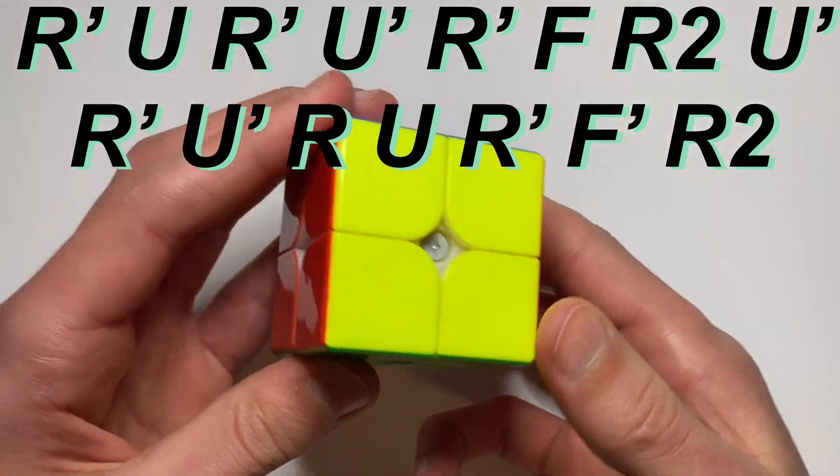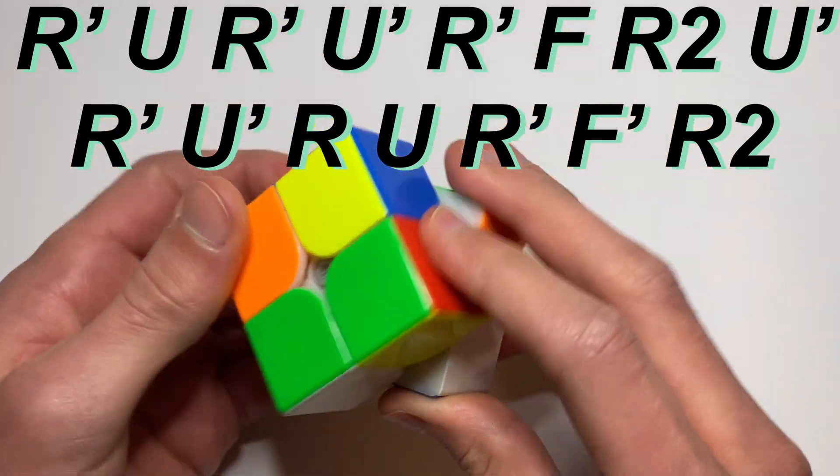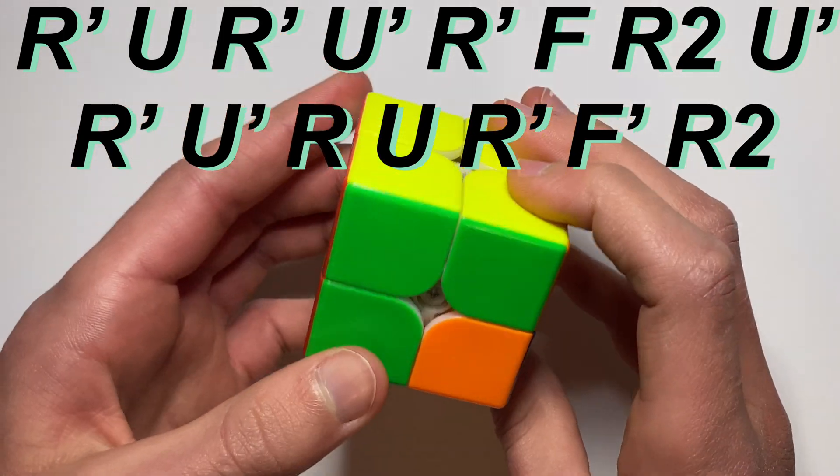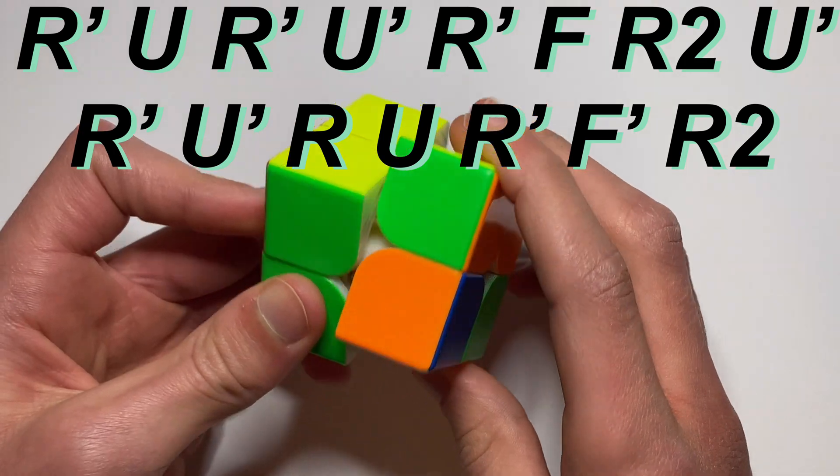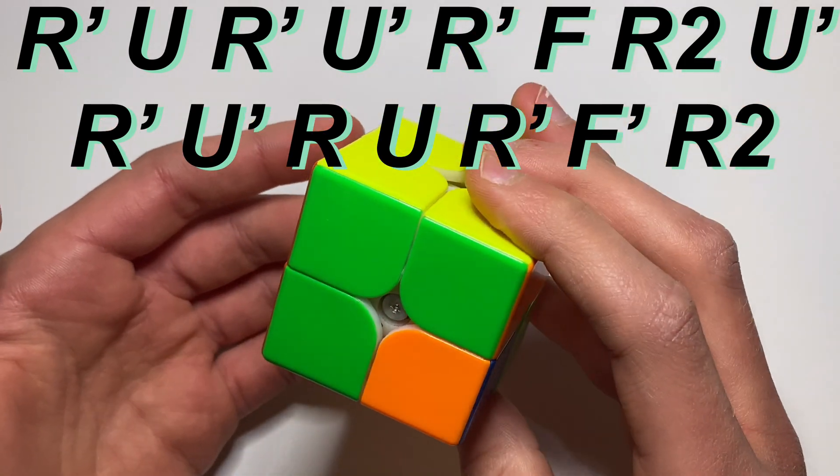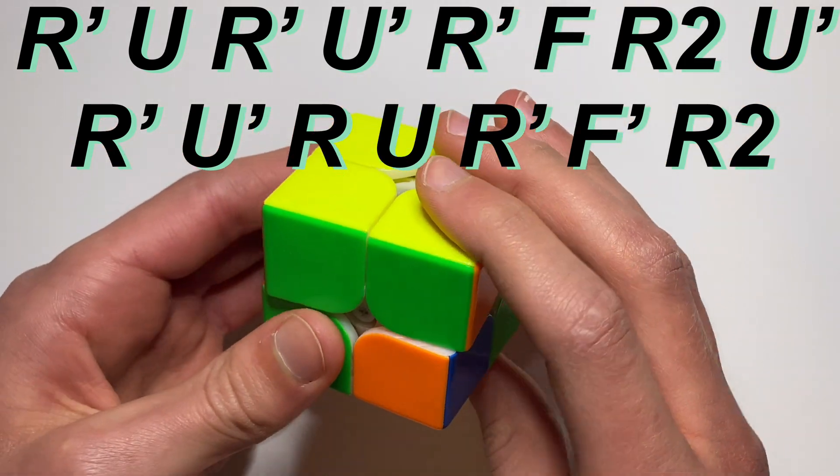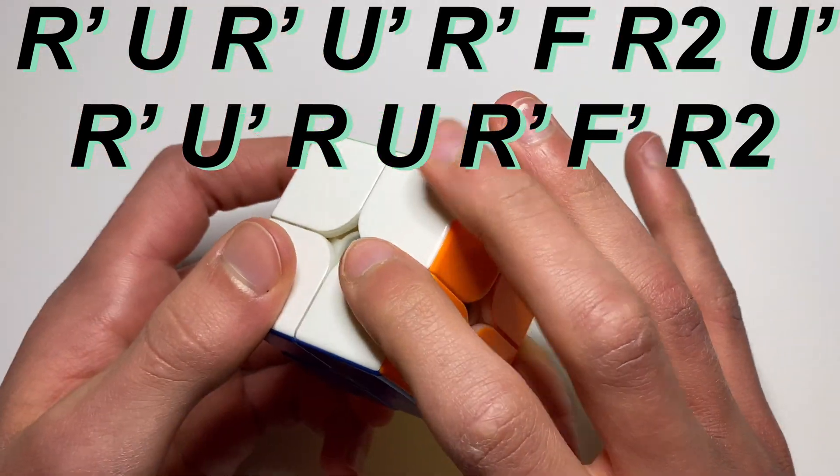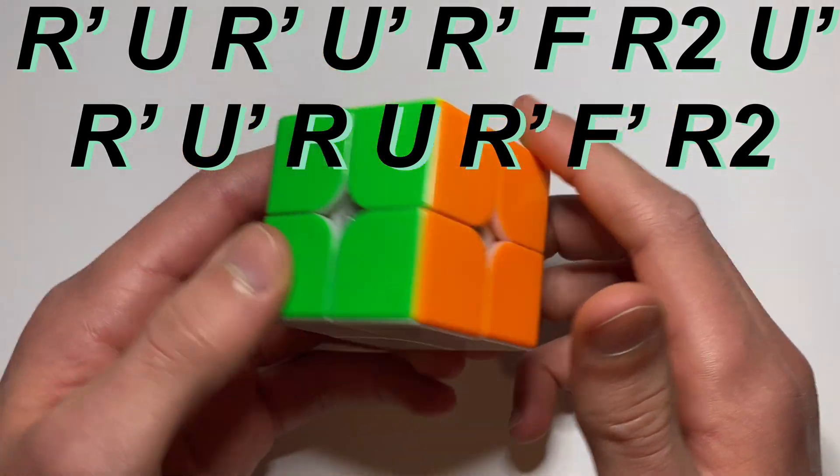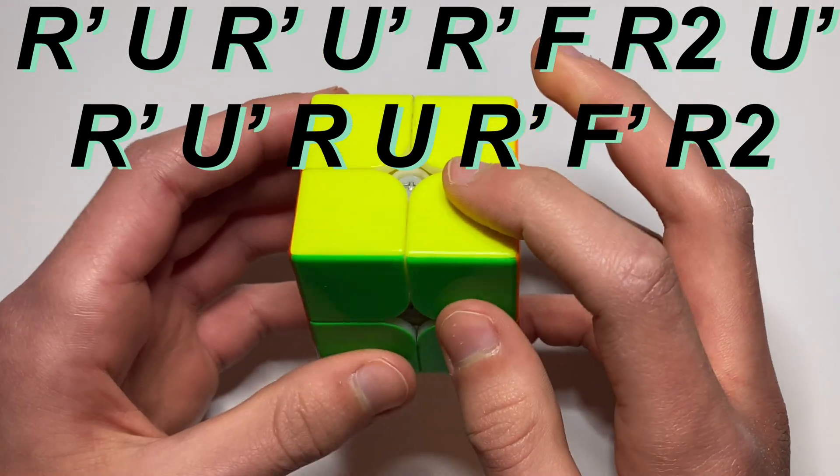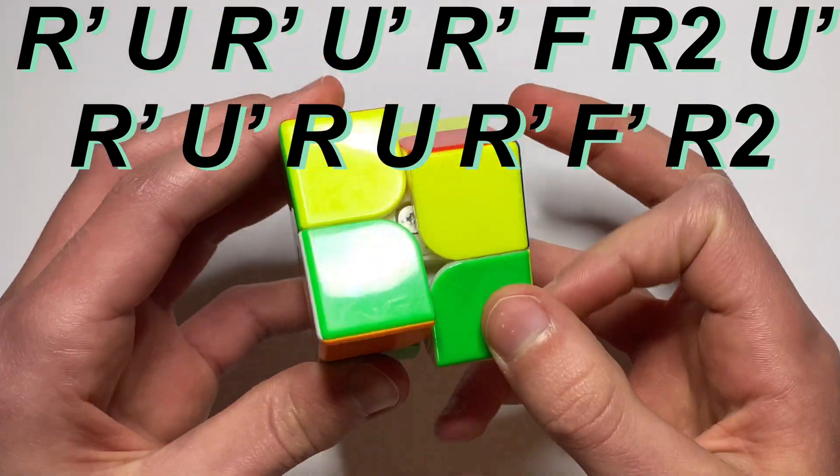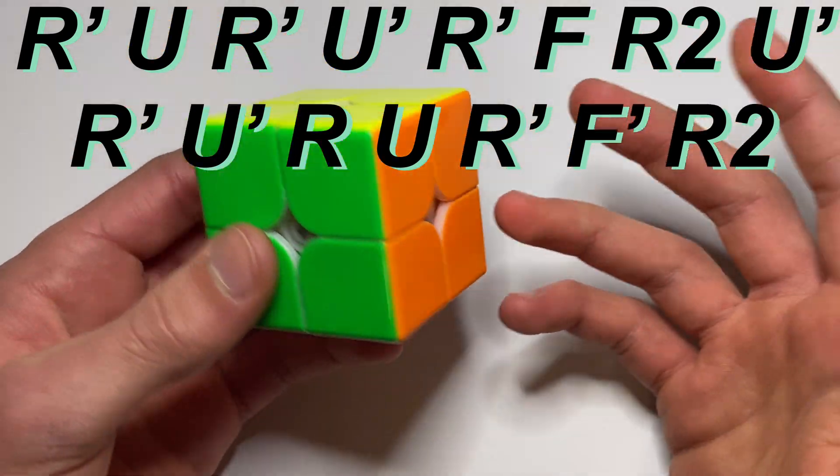Now if you do a J perm you can do this just like that. So if the algorithm starts off with an R, then you do an R prime. And there's a lot of algorithms that start off with R, so you just do an R prime and then you end in an R2. Now the one I use goes like this. So it ends in an R, so I can just go straight into the R prime.